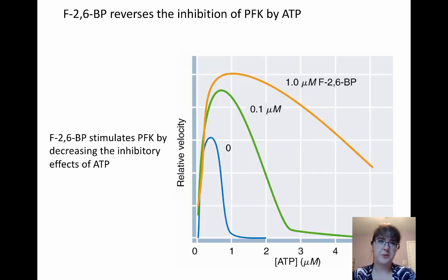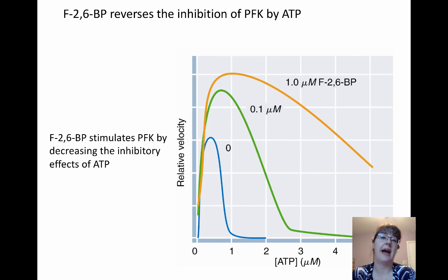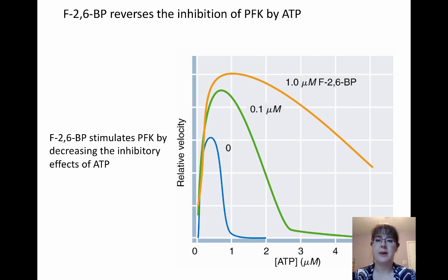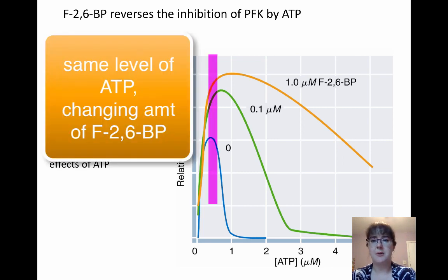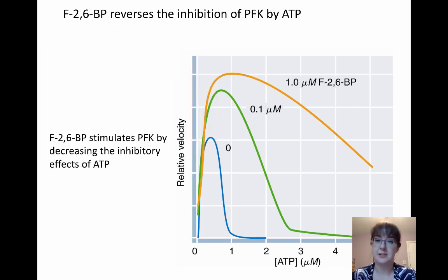As you might imagine from their structures, fructose-2,6-bisphosphate doesn't bind at the same place that ATP does. Because of that, fructose-2,6-bisphosphate can essentially counteract the ATP signal and decrease the inhibitory effects of ATP. On this graph, the x-axis shows increasing amounts of ATP and the y-axis shows relative velocity. As you increase the amount of fructose-2,6-bisphosphate, you also see the relative velocity — the activity of phosphofructokinase — going up.